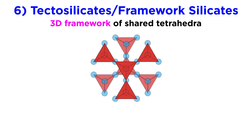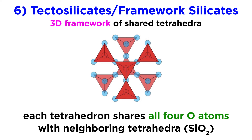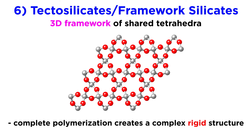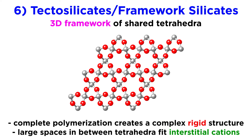We will now move on to the most abundant subclass of minerals in the Earth's crust: the framework silicates, or tectosilicates. These minerals have a backbone of silica tetrahedra that share all four of their oxygens with neighboring silica tetrahedra. The framework silicates have a silicon to oxygen ratio of 1 to 2, with aluminum often substituting for silicon in the tetrahedral sites, as in the feldspar anorthite, where half its tetrahedral sites are occupied by aluminum. The complete polymerization of tetrahedra creates a complex, rigid structure with large spaces in between, allowing for a wide range of interstitial large cations.